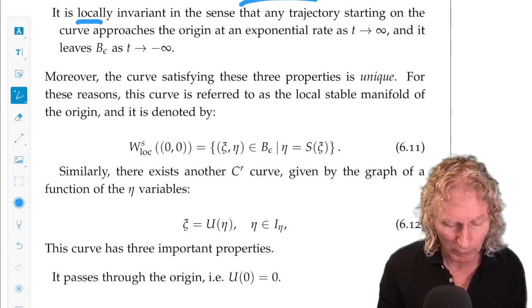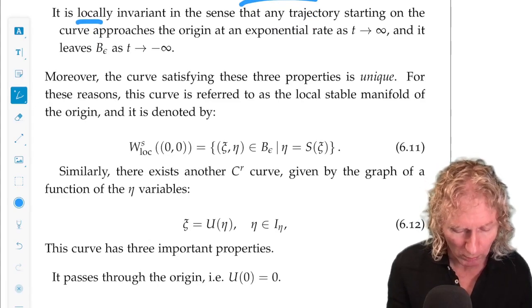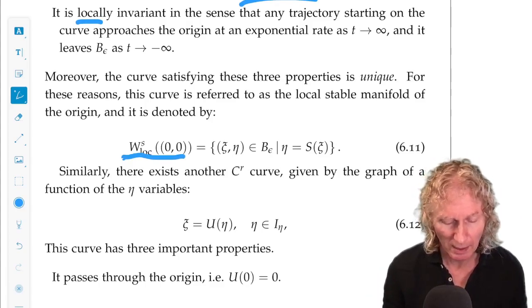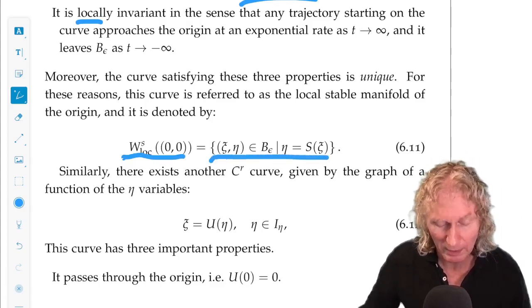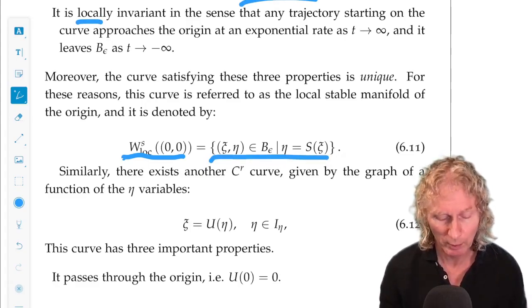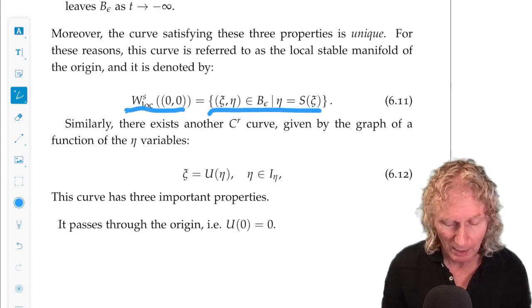In the sense that any other curve satisfying these three properties would have to be the same curve. And we refer to this as the local stable manifold of the origin. And we're writing out in detail what this is. This is exactly in mathematical terminology what I just stated.